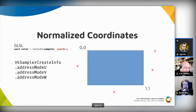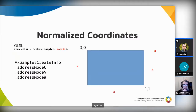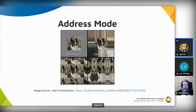When you create a sampler, you can specify a so-called addressing mode that is independent for each of the three texture coordinate axes. In a 2D image, we would only be using two of those. There are several possible address modes. The most common one is probably the repeat addressing mode, which applies a modulo operation to the coordinates, as if the texture was virtually repeating in the selected axis.